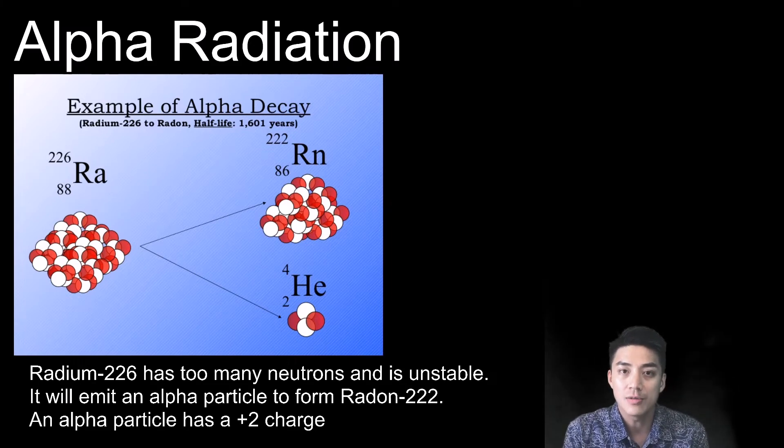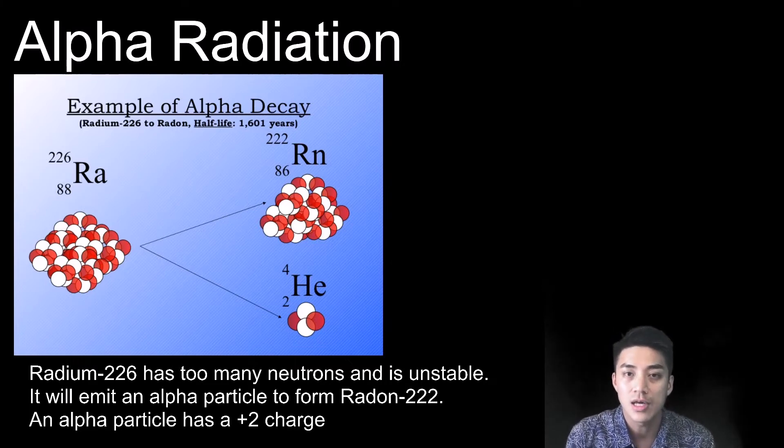It's going to spit out a piece of itself, an alpha particle. An alpha particle is a helium nucleus without its electrons. So an alpha particle has a plus two charge. And in doing so, it creates radon-222.